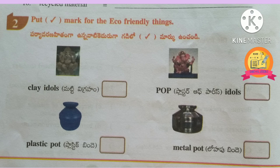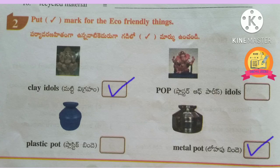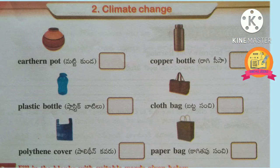Second Roman: put a tick mark for the eco-friendly things. The eco-friendly things from the given pictures are clay idols, metal pot, earthen pot, copper bottle, cloth bag, paper bag.